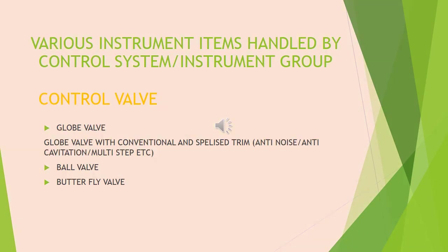Control valves are used as throttling/regulating instruments and are known as the final control element in process control industries. There are different types of manual and automatic valves available; as instrumentation engineers we deal only with automatic valves. In instrumentation engineering we mostly use globe control valve, ball control valve, and butterfly control valve. Generally globe valves are used for smaller lines and butterfly valves for bigger lines, with detailed selection criteria to be discussed separately.